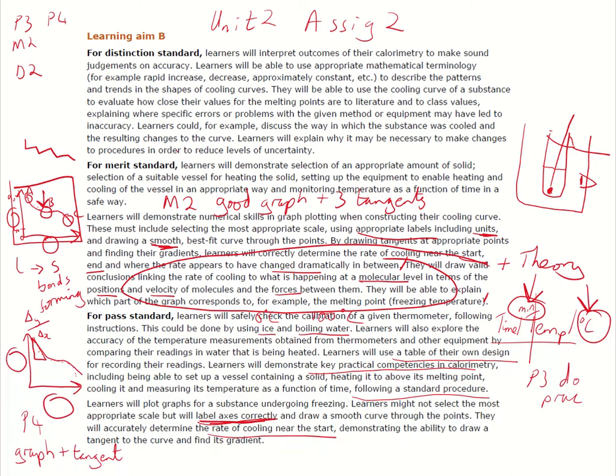Now the distinction, learners will interpret outcomes of their calorimetry to make sound judgments on accuracy. So whatever melting point you've got for your two chemicals, Google the true value, make sure to reference where you get the true value from, and compare yours to it. Is it close or not?